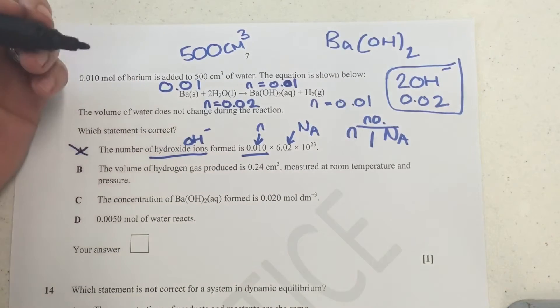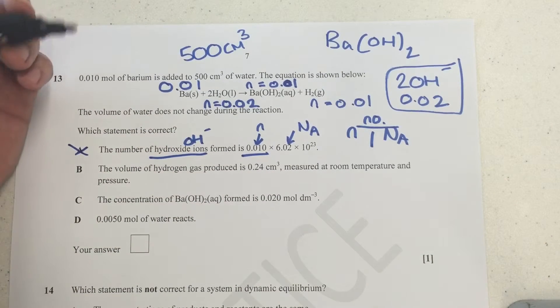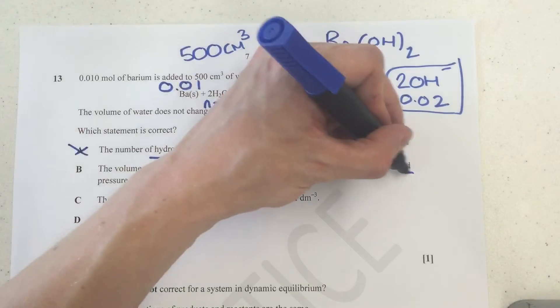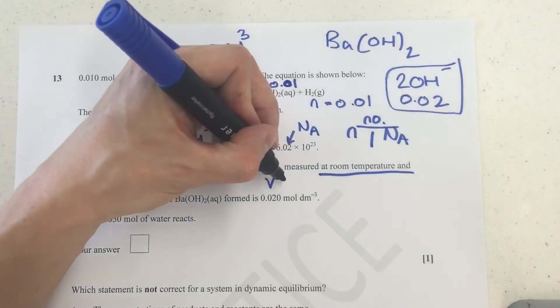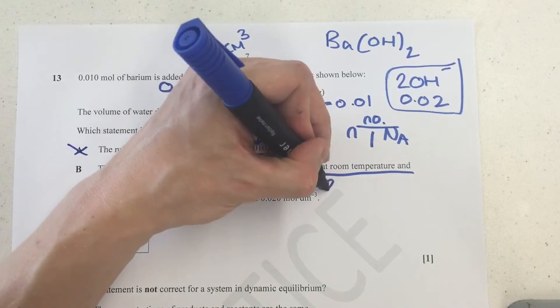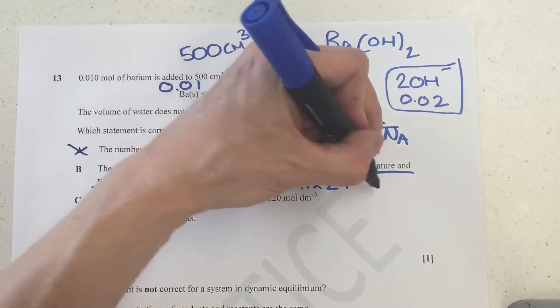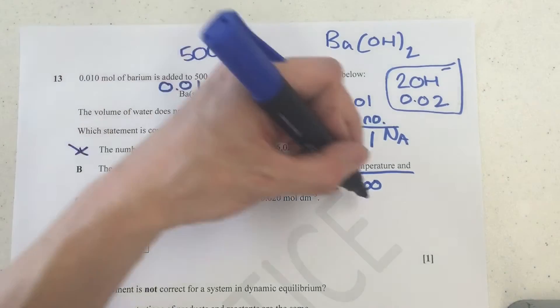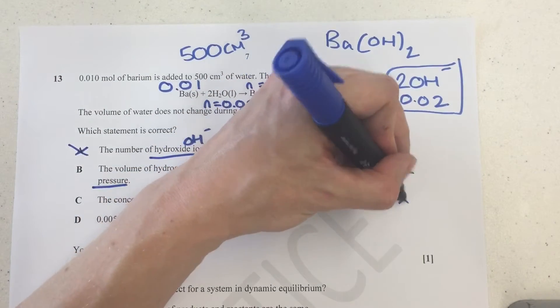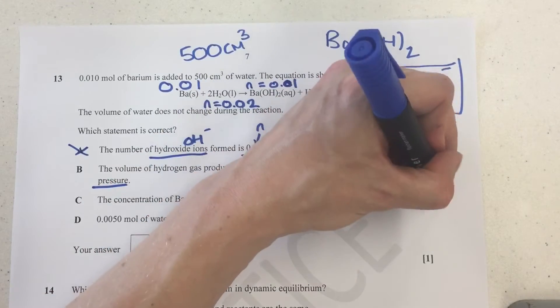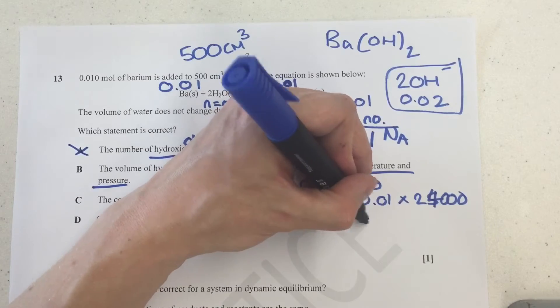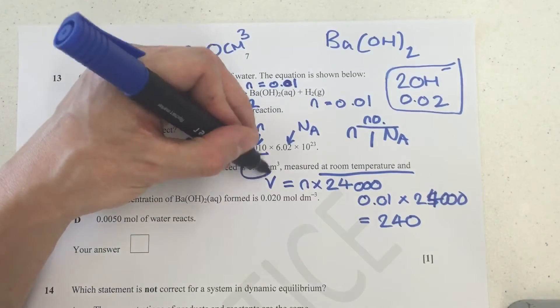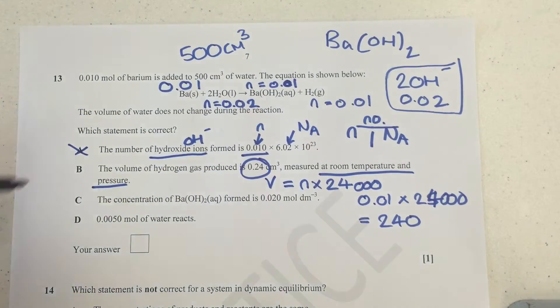Next one, the volume of hydrogen gas produced is 0.24 centimeters cubed. So what we can do for this one is we can actually calculate what the volume would be. So volume for a gas, we're told it's under standard conditions. So volume for this is going to equal moles times 24, and that would give us an answer in decimeters cubed. I can use 24,000 if I want to get an answer in centimeters cubed for this one. So numbers for this are going to be 0.01 times 24,000. And that's going to give me an answer of 240. Now that's obviously not the same answer as they've got here. So it cannot be that at all.